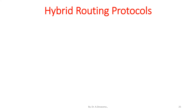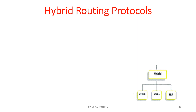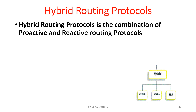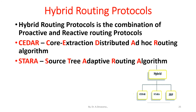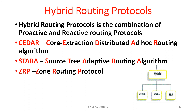The third classification is hybrid routing protocols. Hybrid routing protocols are the combination of proactive and reactive routing protocols. The types of hybrid routing protocols include CEDAR (Core Extraction Distributed Ad hoc Routing Algorithm), STARA (Source Tree Adaptive Routing Algorithm), and ZRP (Zone Routing Protocol).